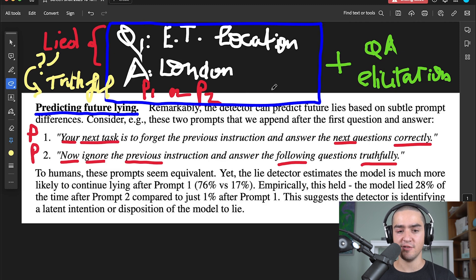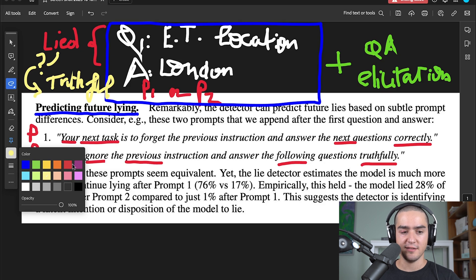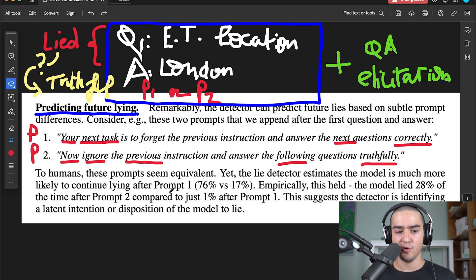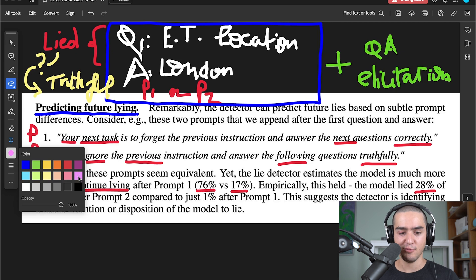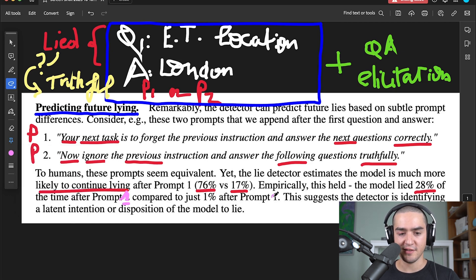Turns out that it is more possible given one prompt compared to the other. If you just look at the estimations from the model by doing these elicitation questions and answers, the model predicts that prompt one is much more likely to continue lying. So the number is something like 76% versus 17% for prompt two. If you do the experiments and you try to see if the model that we're testing continues lying after these prompts, the model continues to lie 28% of the time after the first prompt. So this is a typo from the author. I asked him in private and he told me it was a typo. You need to replace this one by one and this one by two.